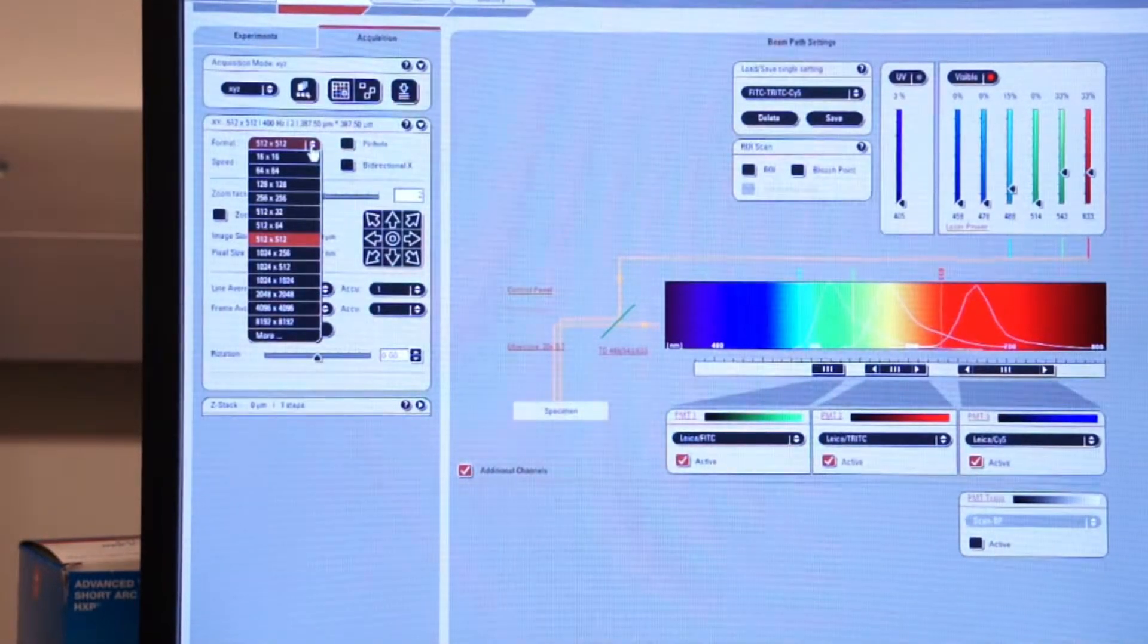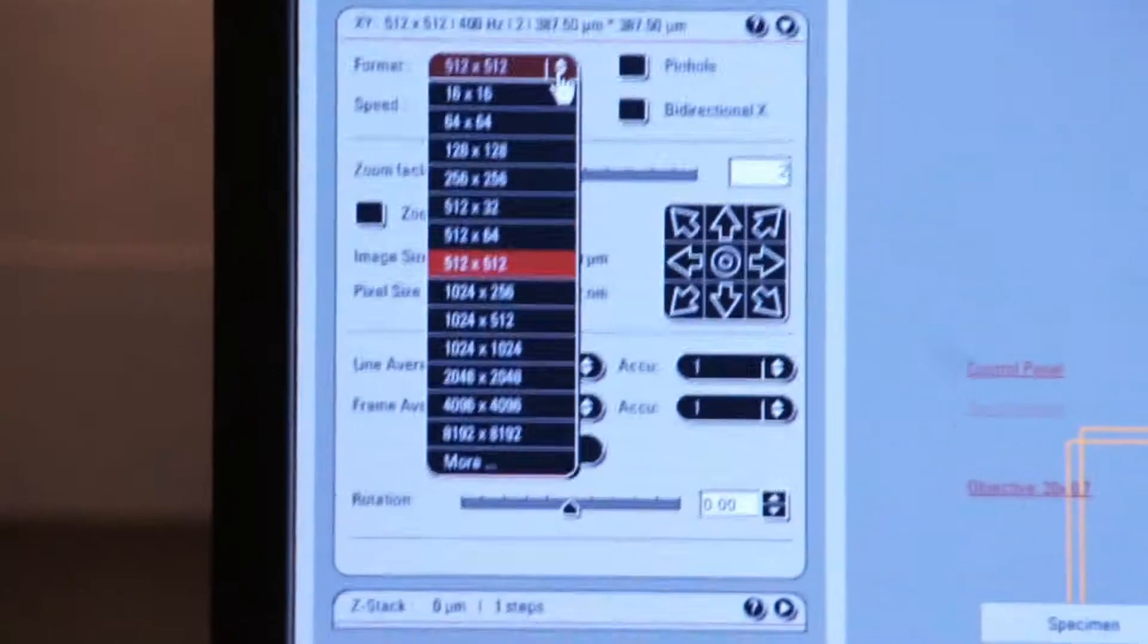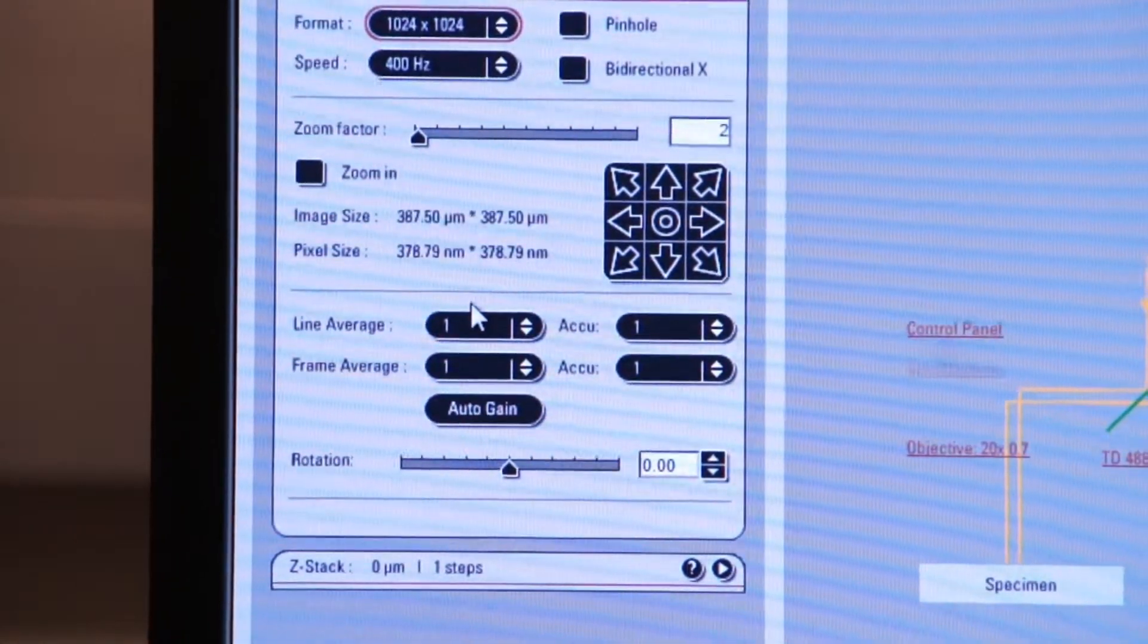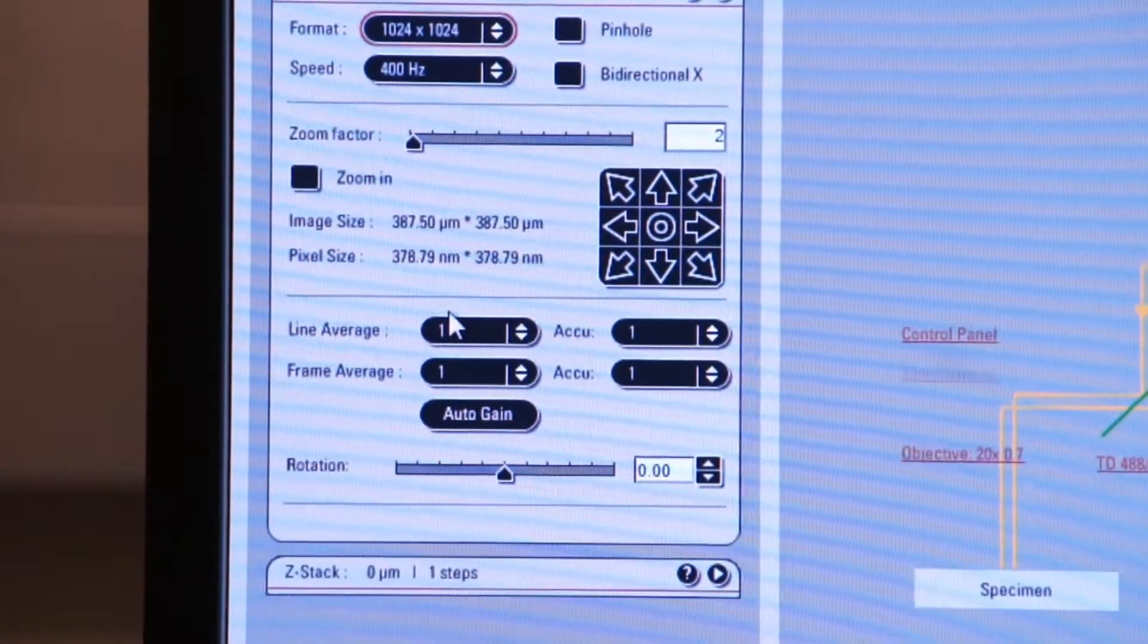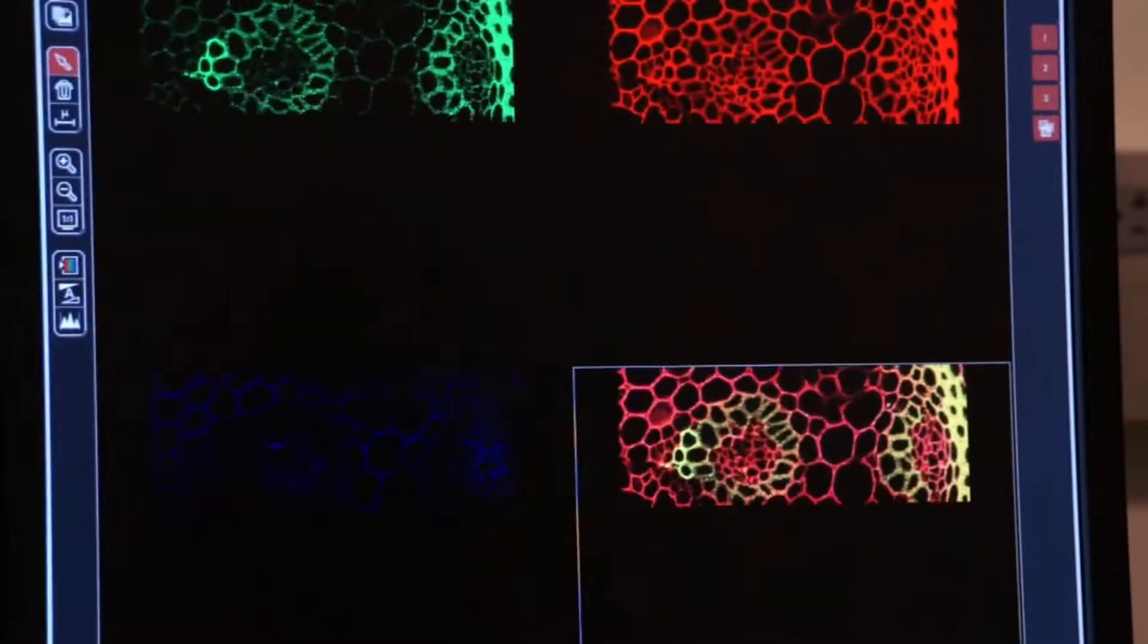I can go back over here to this screen and I can increase my digitizer resolution. So let's go 1024 by 1024. We'll click on capture image again. You'll see the system capture an image.